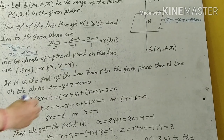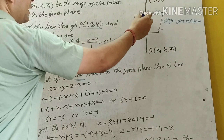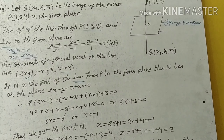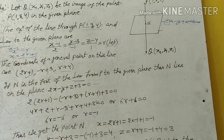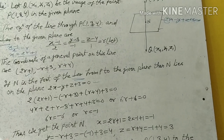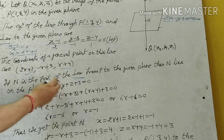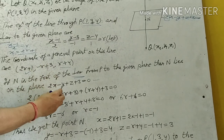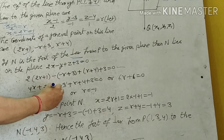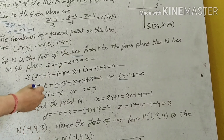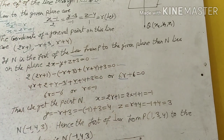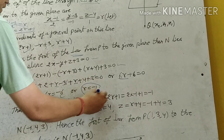If N is the foot of the perpendicular from P to the given plane, then N lies on the plane 2x minus y plus z plus 3 equal to 0. Substituting the general point: 2(2r plus 1) minus (minus r plus 3) plus (r plus 4) plus 3 equal to 0. Simplifying: 4r plus 2 plus r minus 3 plus r plus 4 plus 3 equal to 0. The plus 3 and minus 3 cancel, giving 6r plus 6 equal to 0, so r equal to minus 1.